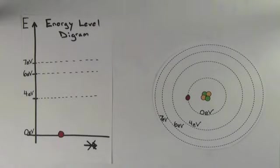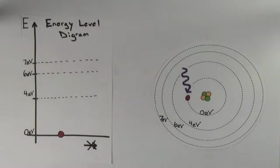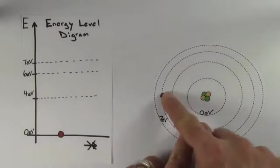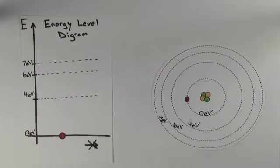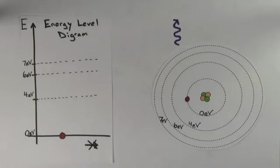Electrons don't have to just jump one energy level at a time though. If the electron in our ground state were to absorb a 6 eV photon, the electron could jump all the way up to the 6 eV energy level. Now that the electron's at a higher energy level, it's going to try to fall back down. But there's a couple ways it could fall back down in this case. The electron could fall down to the ground state all in one shot, giving up a 6 eV photon in the process.